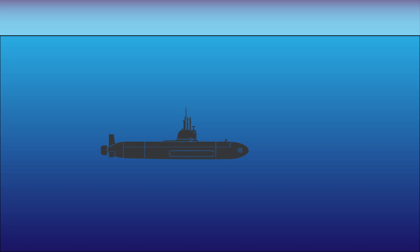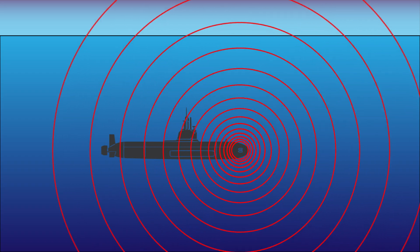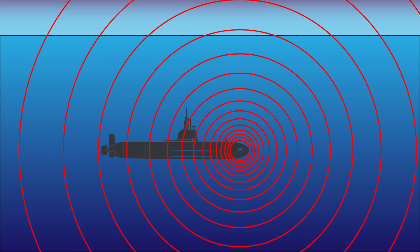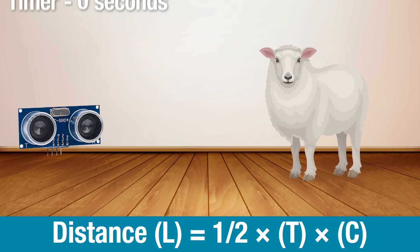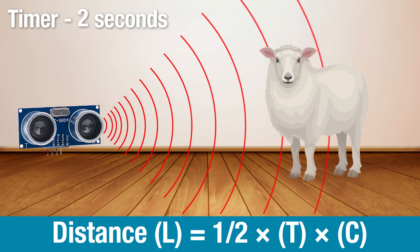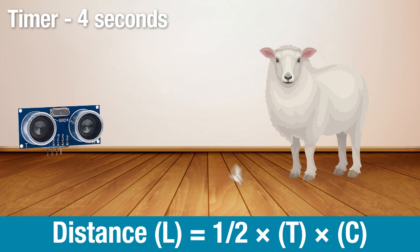Ships and submarines use the same technique to detect objects underwater with sonar. The time it takes for the sound to reflect back to the sonar is used to calculate the distance of the objects. The formula for calculating distance is one-half T times C. T is the time it takes for the ultrasound to travel to the object and return to the sensor. Since that's twice the distance, we multiply by half so the distance is only counted once, then multiply by C, the speed of sound.